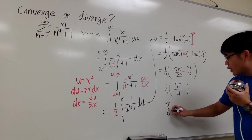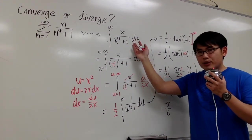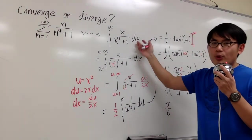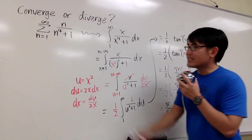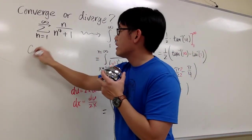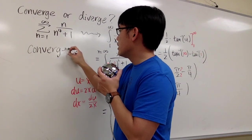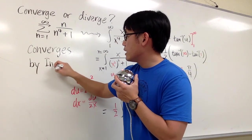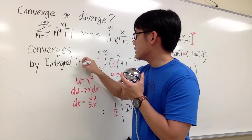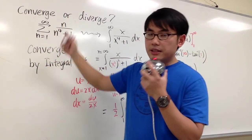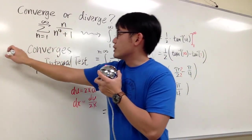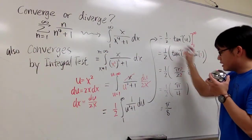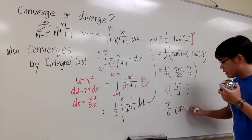All we are doing is showing that this improper integral gives us a finite result — namely, pi over 8 — so this improper integral converges. Therefore, we can say that this infinite series also converges by the integral test. Because this integral gives us a finite number, it was convergent.